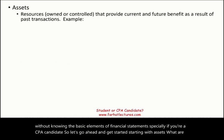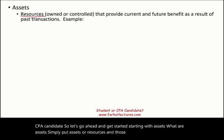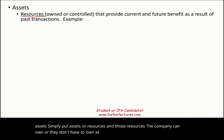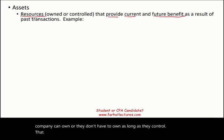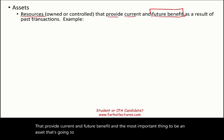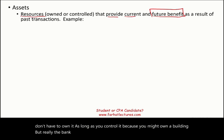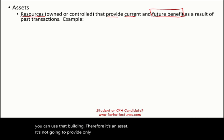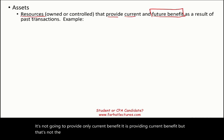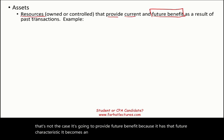What are assets? Simply put, assets are resources that the company can own or control — they don't have to own them as long as they control them — that provide current and future benefit. The most important thing to be an asset is it's going to provide future benefit as a result of past transactions. You might own a building but the bank really owns it because you have a mortgage on it, but you can use that building, therefore it's an asset. Because it has that future characteristic, it becomes an asset, and the assumption is we're going to be in business forever.